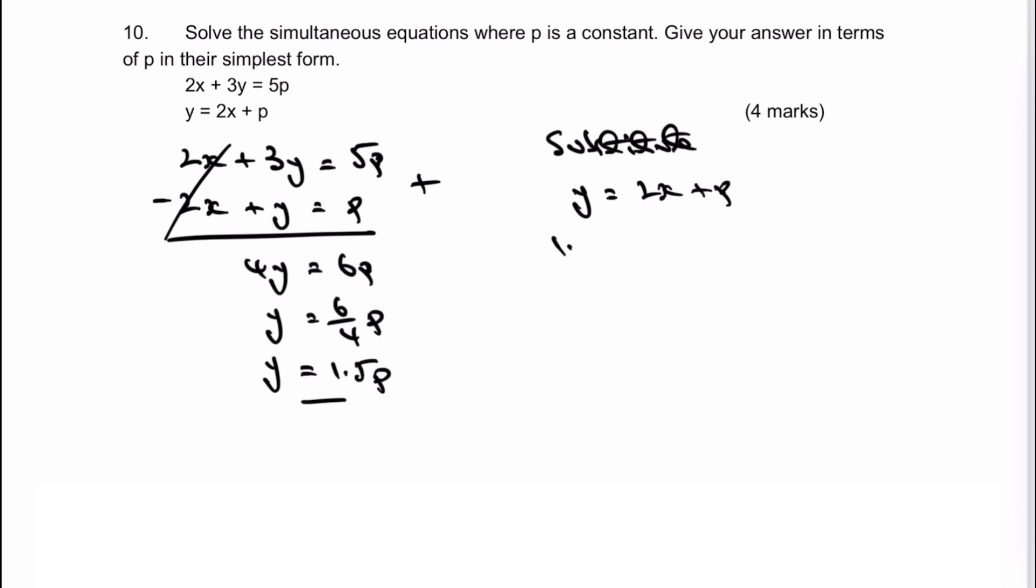So I can write that as 1.5p equals 2x plus p. If I take away p from both sides, I get 0.5p equals 2x. Then I'm going to divide by 2, so I get 0.5p divided by 2 equals x.